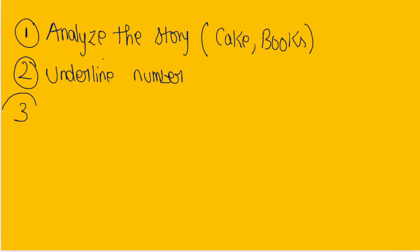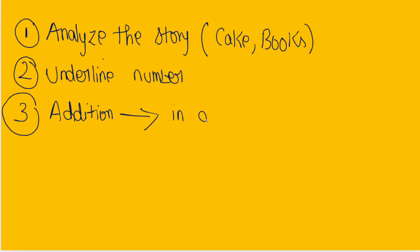The third step is to determine whether we have to do addition, subtraction, multiplication, or division. For addition, the clue word that gives us a hint is 'in all.' If there is a clue like 'in all,' it means we have to do addition.